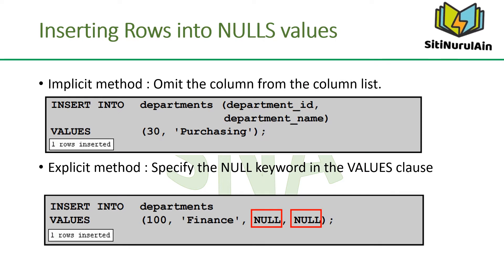There are two methods for inserting rows with null values. The implicit method omits the column from the column list. In the explicit method, the NULL keyword is specified in the value clause. Be sure that you can use null values in the targeted column by verifying the null status with the DESCRIBE command.